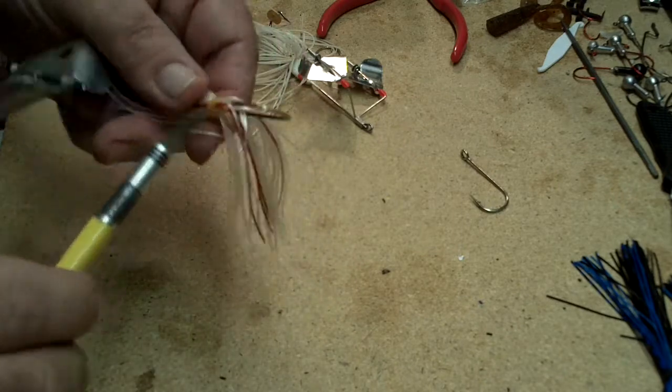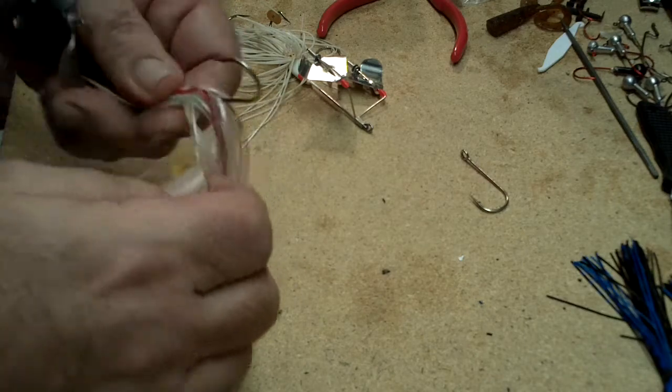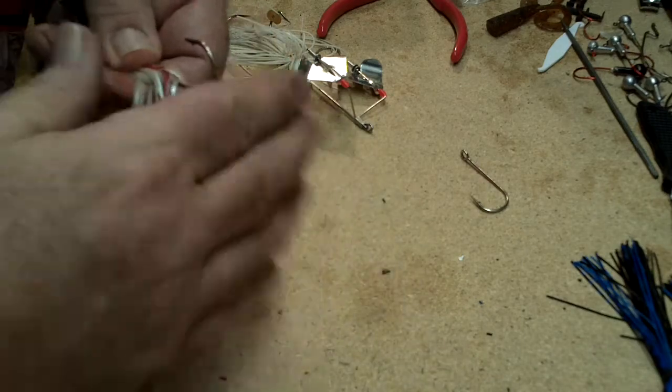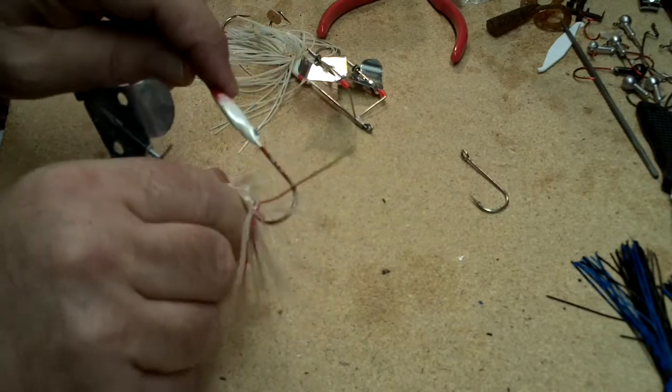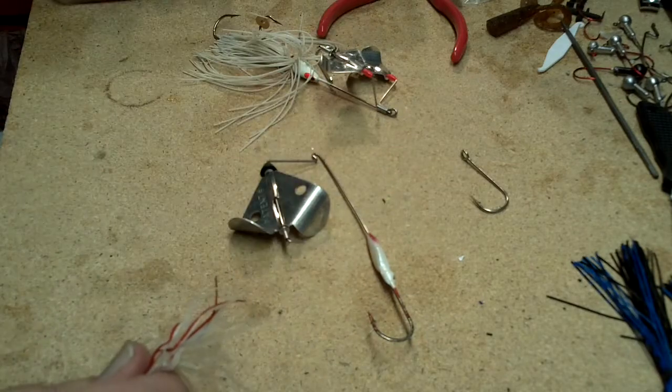Sometimes the little bands just start to rot out. I just cut the old one off, try to keep everything together as much as possible, and discard the old rubber keeper.